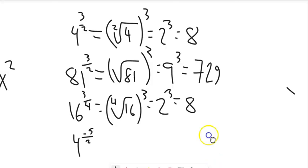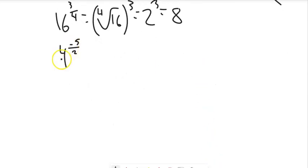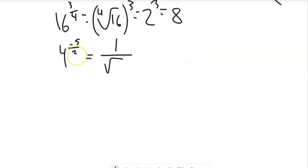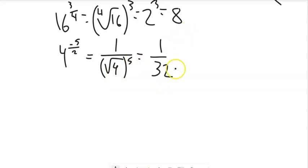For 4 to the negative 5/2: the negative exponent means divide, so it's 1 over the square root of 4 to the 5th power. The square root of 4 is 2, and 2 to the 5th is 32, so the answer is 1/32. Note that a negative exponent doesn't make the answer negative — it turns it into division.